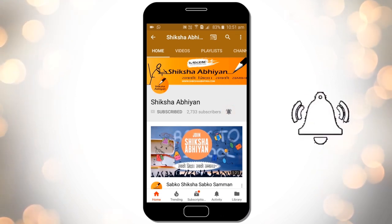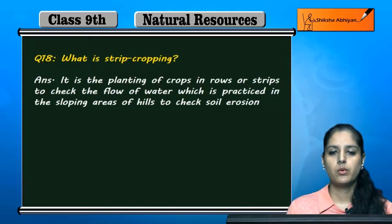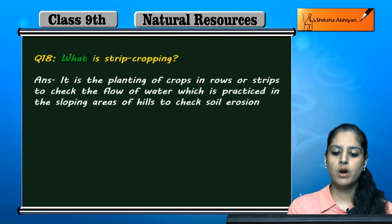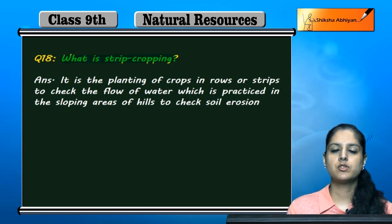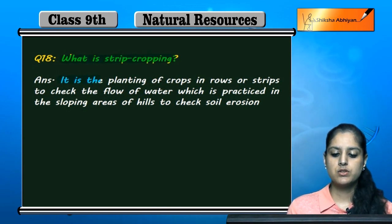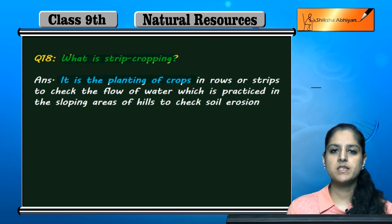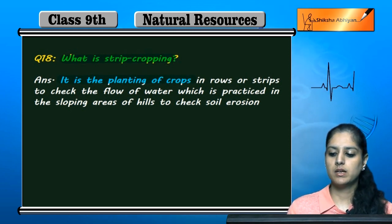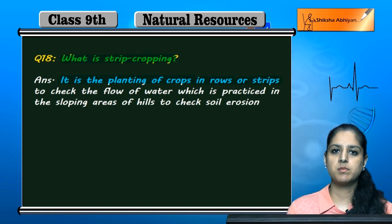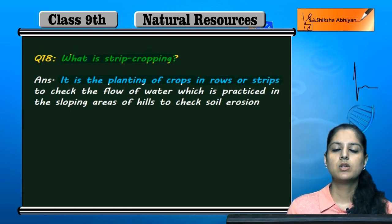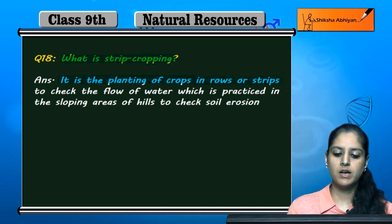Question number 18: What is strip cropping? Strip cropping kya hai? So strip cropping hoti hai crops ki planting — crops ko plant karna rows mein ya phir strips mein hai. So when rows mein or strips mein crops ko plant karte hai...